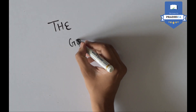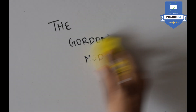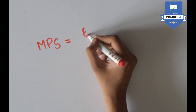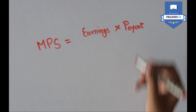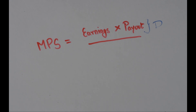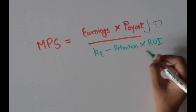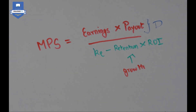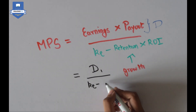The Gordon Model of Dividend Valuation states that the market price of shares of a company equals the earnings made by the company multiplied by the payout ratio — which represents the dividend — divided by the cost of equity minus the retention rate multiplied by the reinvestment rate, which represents growth. The formula can also be rewritten as dividends divided by the cost of equity minus the growth rate.